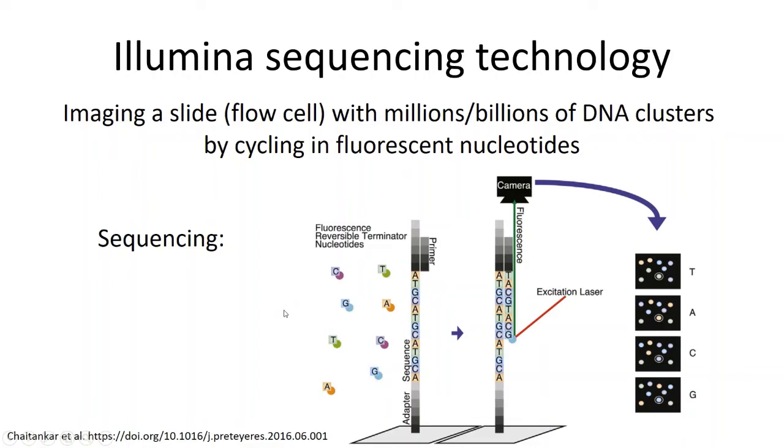Depending on which Illumina platform you're using, between one and four of the nucleotides will contain a fluorophore and there's also reversible terminators so that only one nucleotide is incorporated in each cycle.